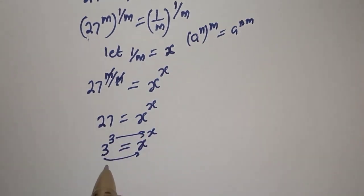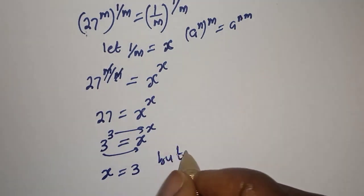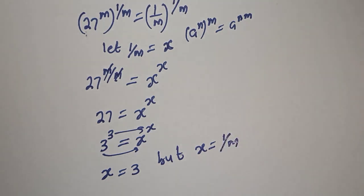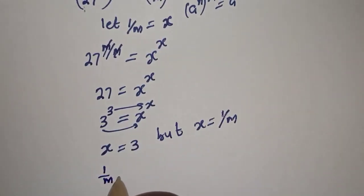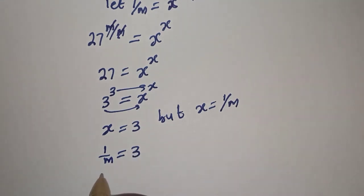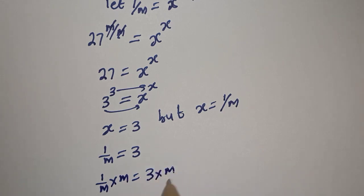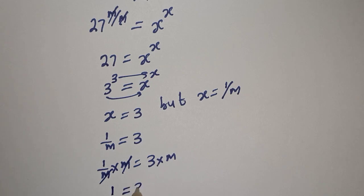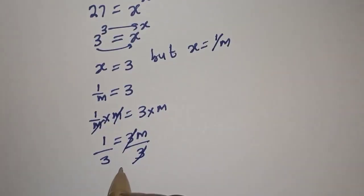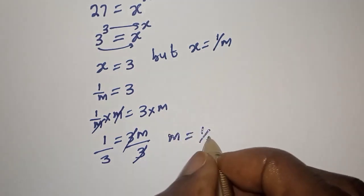From here, the base equals s and the exponent equals s, therefore s is equal to 3. But s is equal to 1 over m, so 1 over m is equal to 3. We are looking for the value of m, so multiplying both sides by m and dividing by 3, m is equal to 1 over 3.